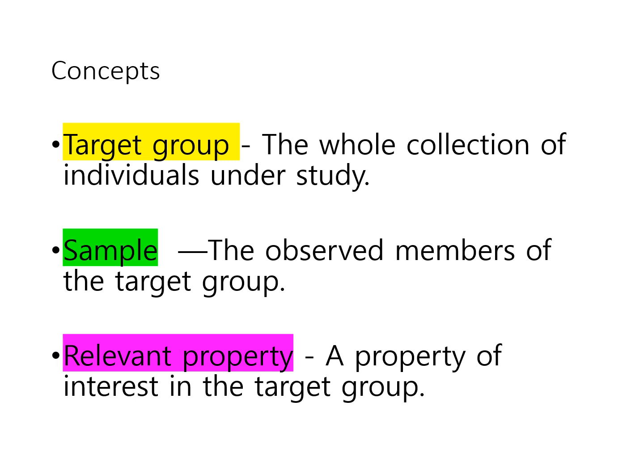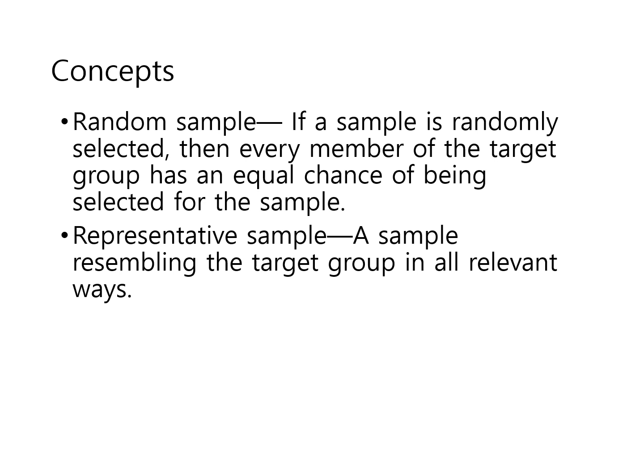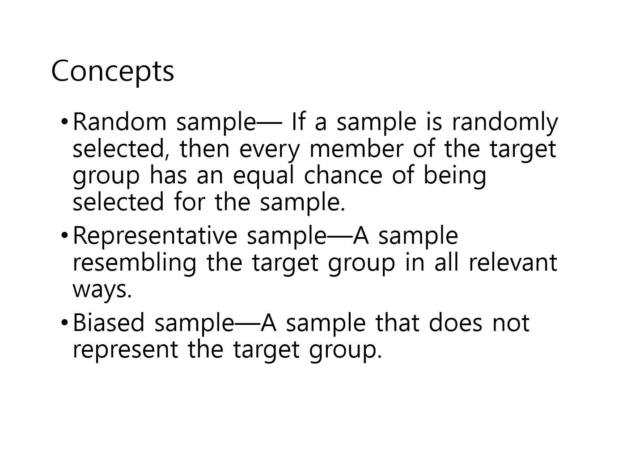And then finally, we have the relevant property — a property of interest in the target group. I've color-coded these three different concepts for an example we're going to consider in just a little bit. Thinking about the sample, what's important is that when you're drawing a sample, you have to draw a random sample. If a sample is randomly selected, then every member of the target group has an equal chance or equal probability of being chosen for the sample. A representative sample is a sample resembling or reflecting the target group in all relevant ways. A biased sample is a sample that does not represent the target group — it is not a representative sample.